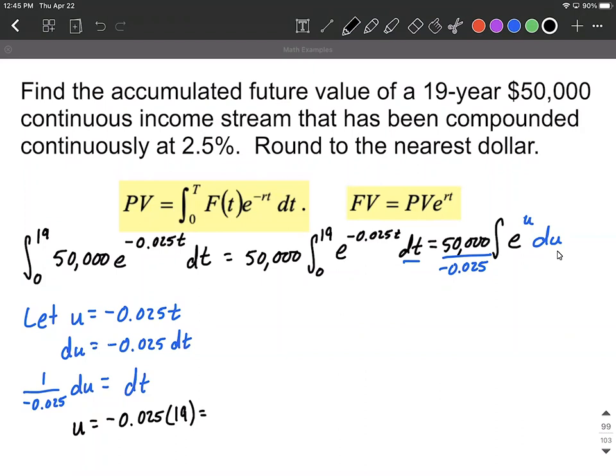The first one I'm going to substitute in is negative 0.025 multiplied by my top bound of integration 19. And this works out to be negative 0.475. And then we're going to plug in the zero as well. That should be an easy computation. Anything times zero is still going to be zero. So our bounds of integration have changed. They're going from zero to negative 0.475.